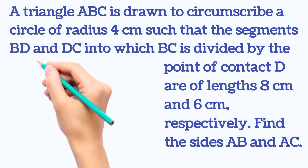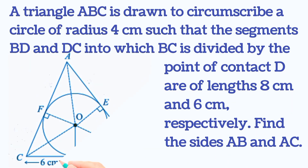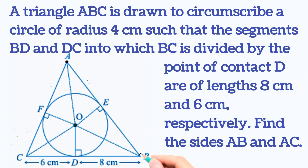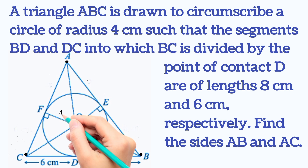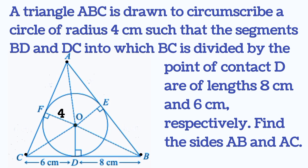Hello everyone, welcome back to my channel. In this question, a triangle ABC is drawn to circumscribe a circle of radius 4 centimeters. D is a point which divides BC into BD = 8 centimeters and DC = 6 centimeters. We have to find side AB and side AC.